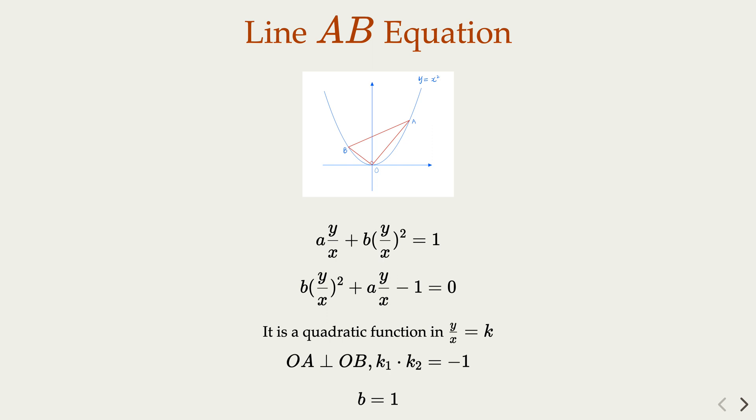So what is the meaning of that? The meaning is that the equation here we're talking about, the straight line satisfies this condition, has to be b equal to 1. Now this straight line always goes through point (0,1). So proof is done.